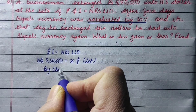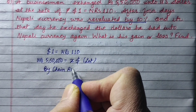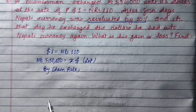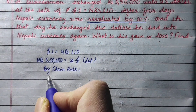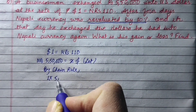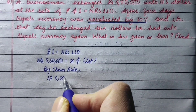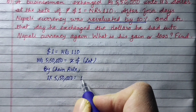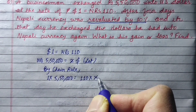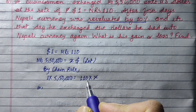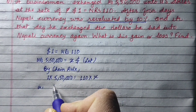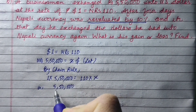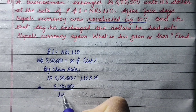By chain rule, we convert: 1 into 5,50,000 equals 110 into x. So x equals 5,50,000 divided by 110.